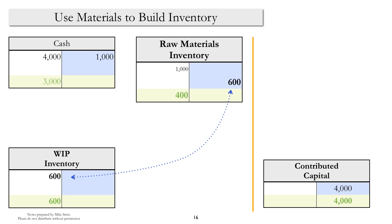Once we start building a product, we're going to transfer some of the raw materials from inventory to the work-in-process account — another inventory account. You can see the credit to raw materials inventory and the debit to work-in-process inventory.